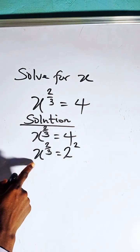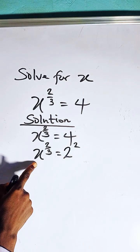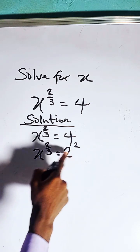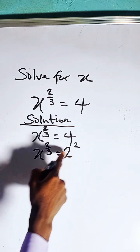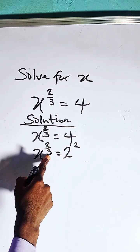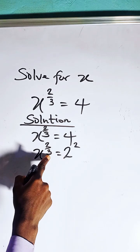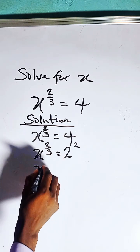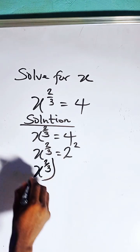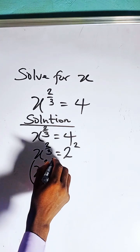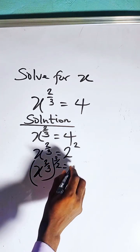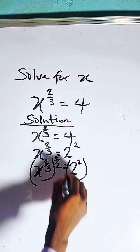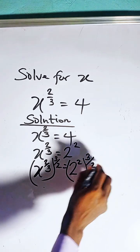Since we are looking for the value of x, what do we do? We multiply both sides by the reciprocal of the power of x, which is 3 over 2. So we have x raised to the power of 2 over 3, times 3 over 2, equals 2 squared times 3 over 2.